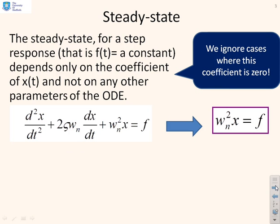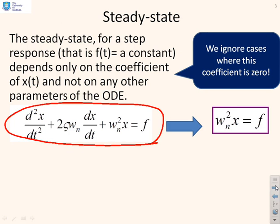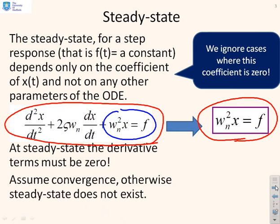The steady state for a step response depends only on the coefficient of x(t) and not on any other parameters. Although we started with a differential equation, we've said the steady state only comes from two terms. At steady state, the derivative terms must be zero — otherwise you're not at steady state. So we can cross out those terms, and what we're left with is ωn²x = f.